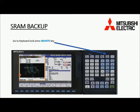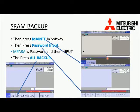Now we will see how to take SRAM backup. For this we have to go to the keyboard and press the AI and EE keys. This brings up the first option in the softkey. Then a new page opens where we find the first softkey as password input. Press it and enter the password MPRA from the keyboard, then press input.